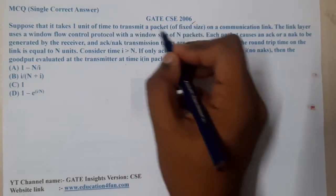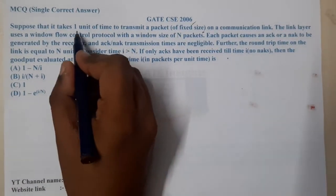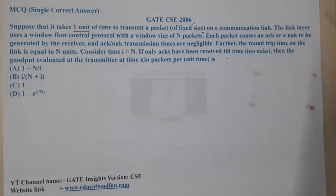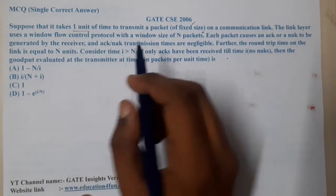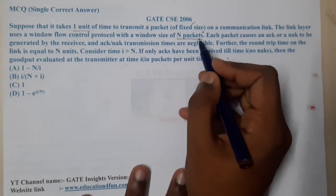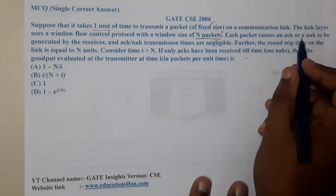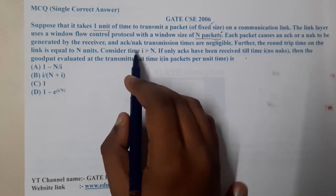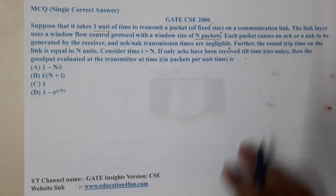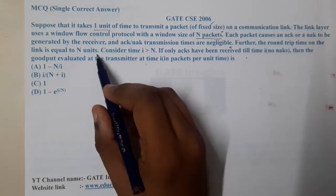It takes one unit of time to transmit a packet of fixed size on a communication network. The link layer uses a window flow control protocol with a window size of N packets. Each packet causes an acknowledgement or NAK (negative acknowledgement) to be generated by the receiver, and ACK/NAK transmission times are negligible.